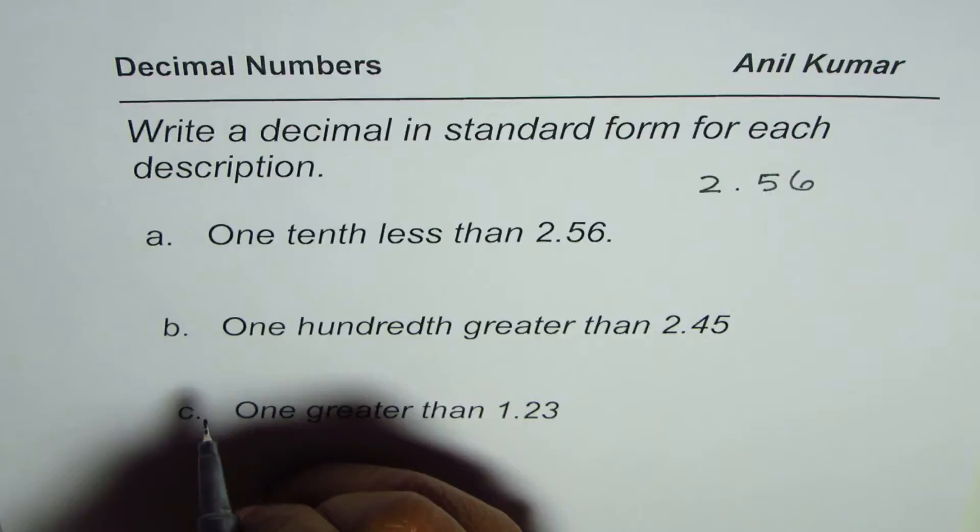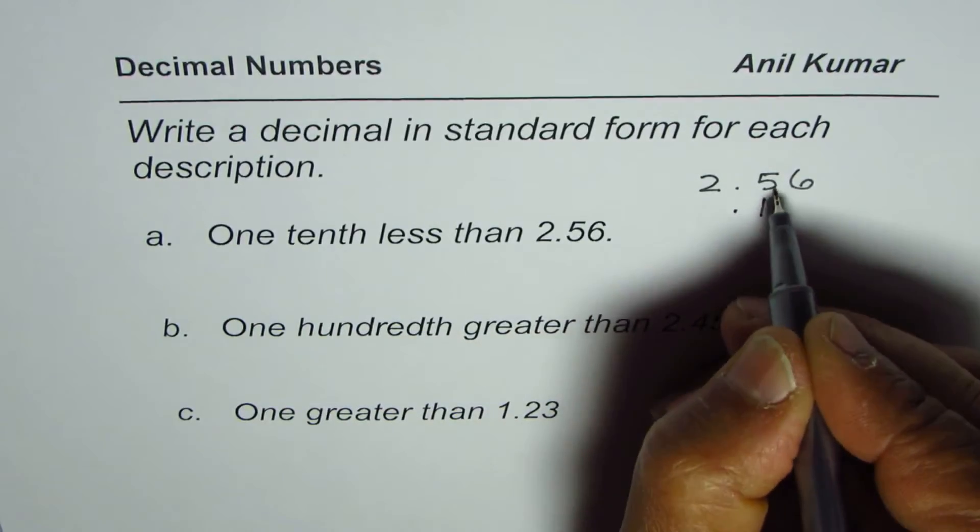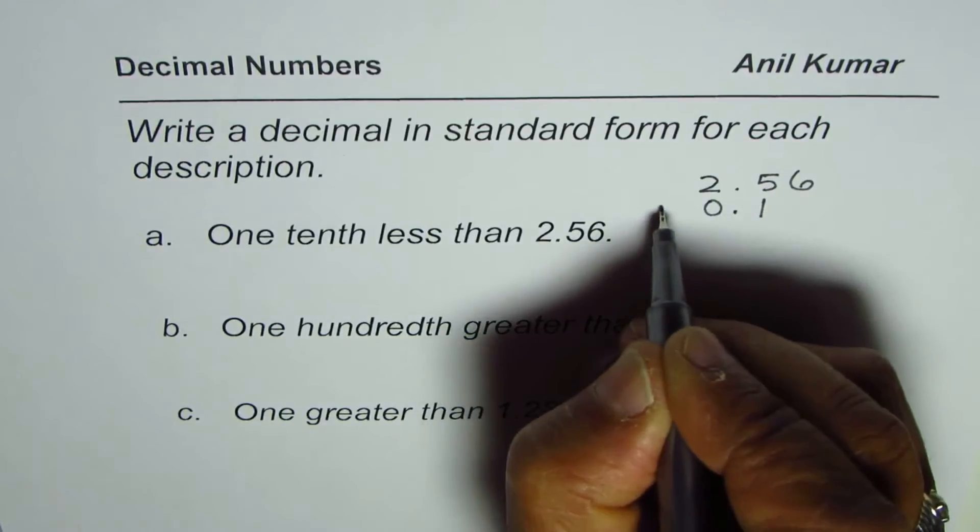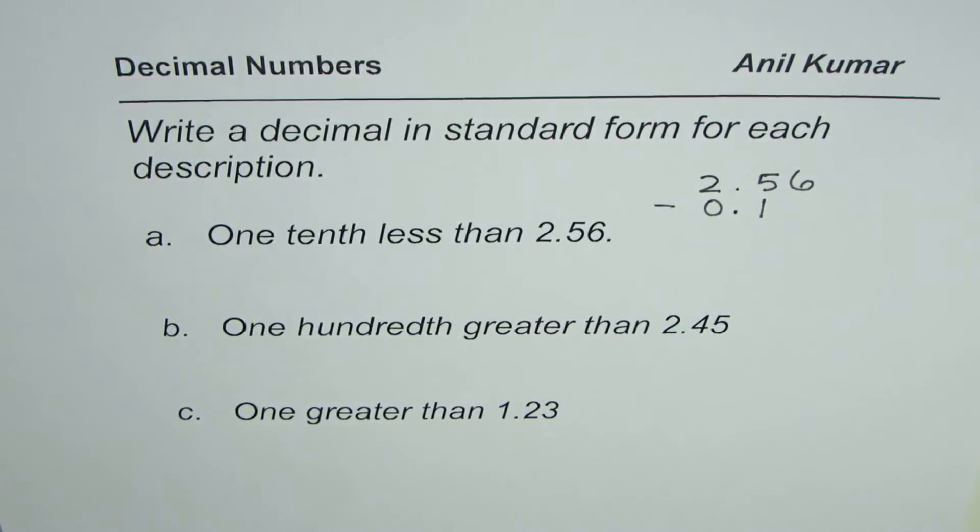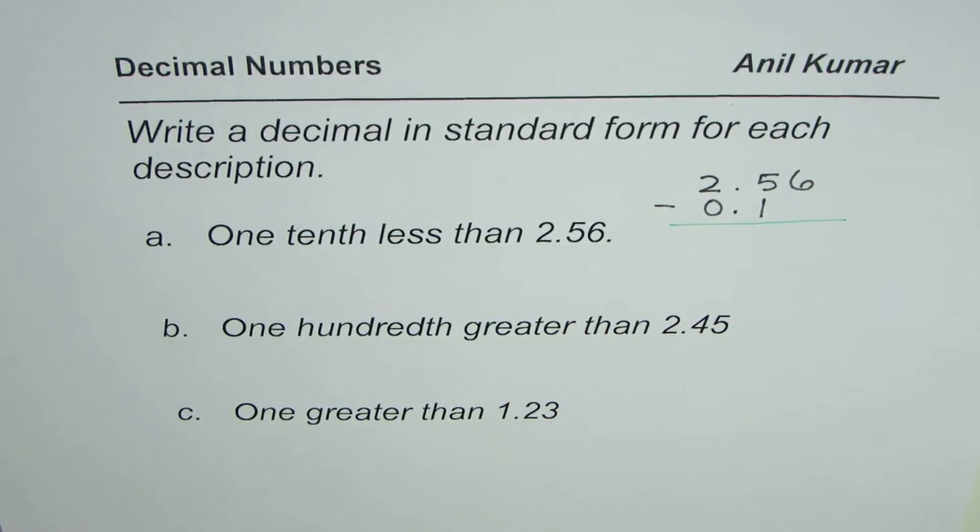One tenth means there is 1 in the tenths place. It's like 0.1. That is one tenth. So one tenth less than 2.56 is this number. So we can take away and then write down the number itself.